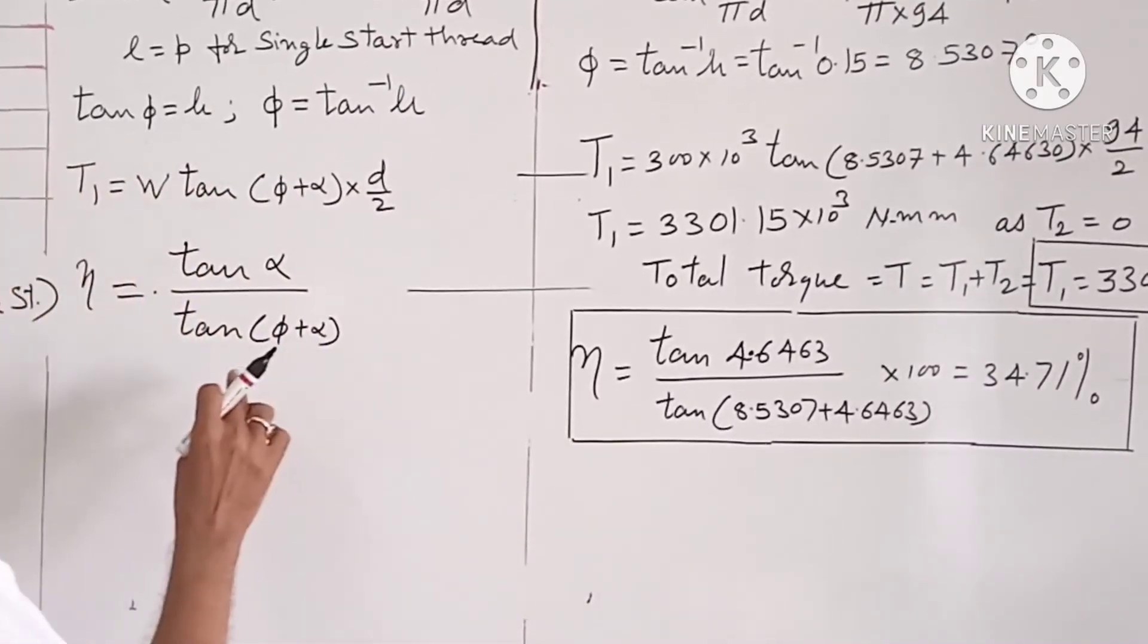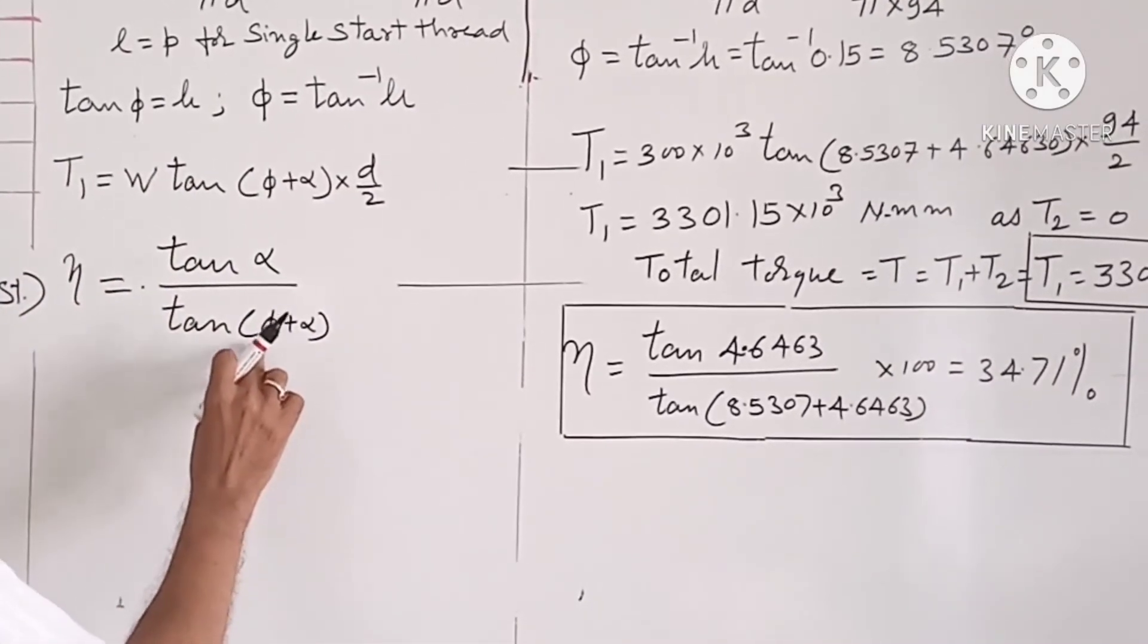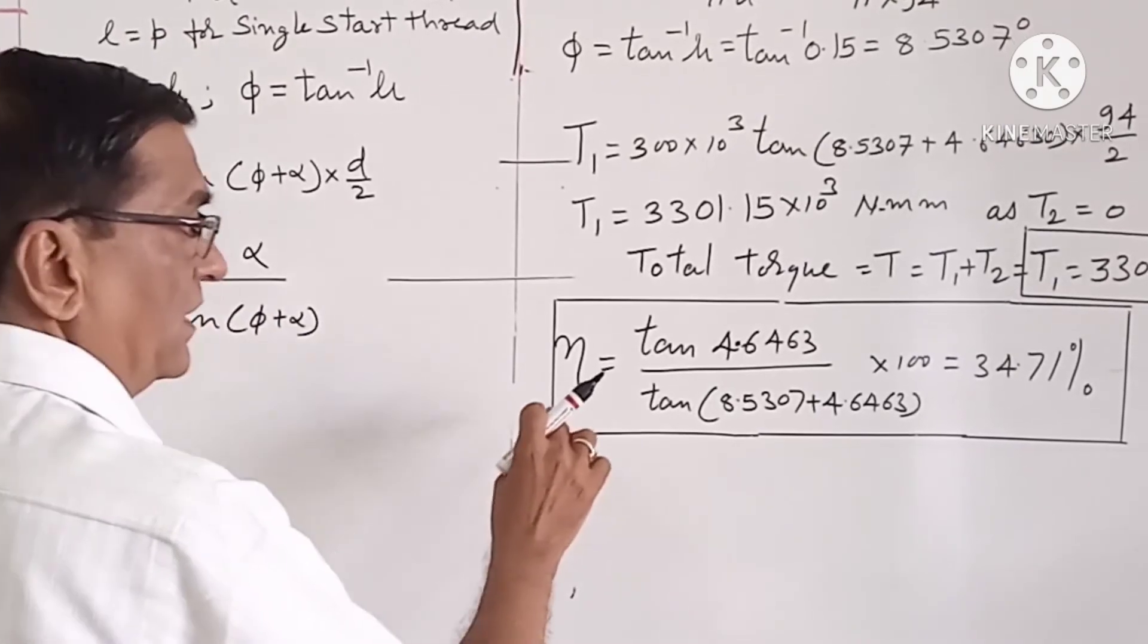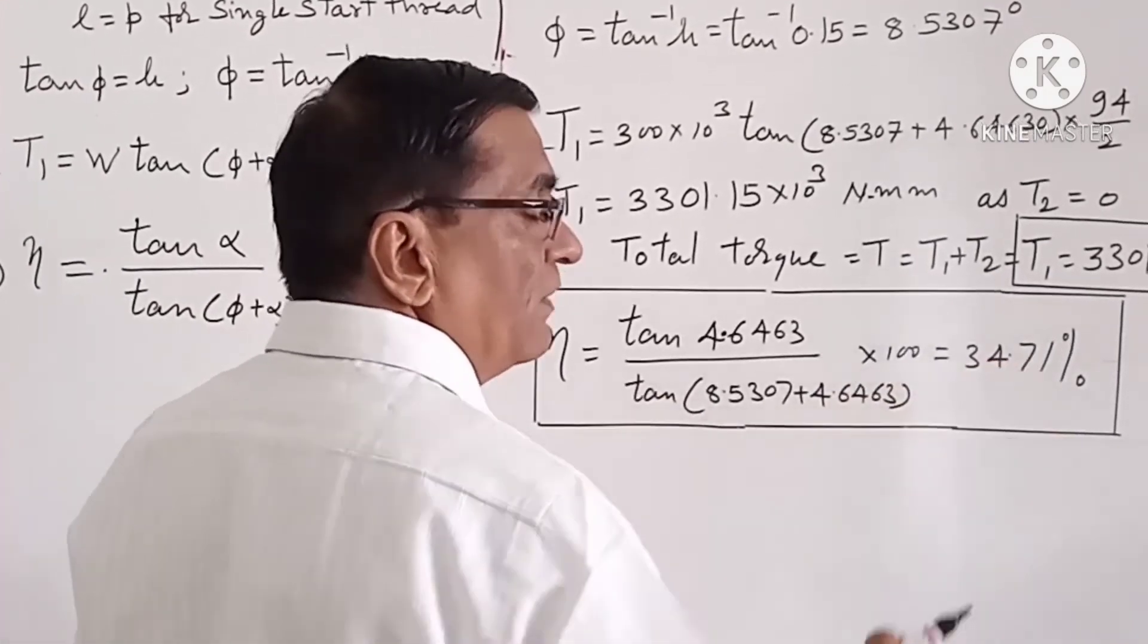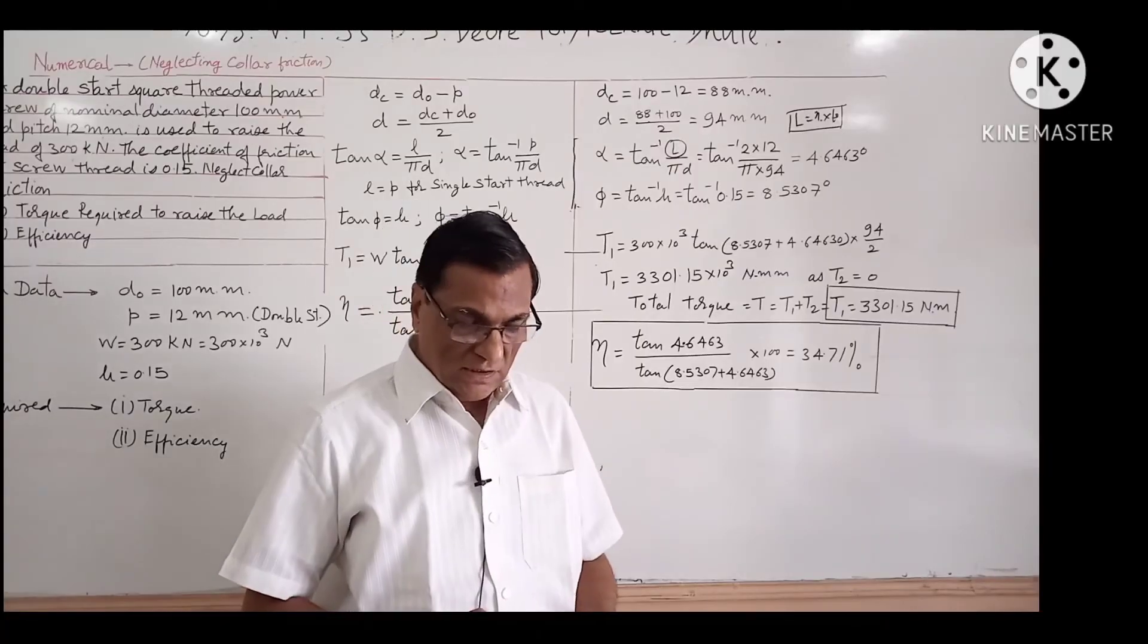We will calculate the efficiency by putting the values of φ and α. The efficiency comes out to be 34.71%. In this way,